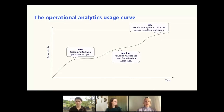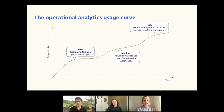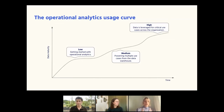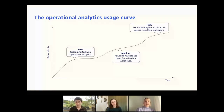We might consider a low-usage case where a company is just getting started with operational analytics and some of the challenges they might face, but also benefits they can reap early on. Then a medium-usage stage where the company is powering multiple use cases from the data warehouse, starting to benefit from joining different datasets. Then a high-usage stage where data is leveraged for critical use cases across the organization, sent to many downstream tools consistently.